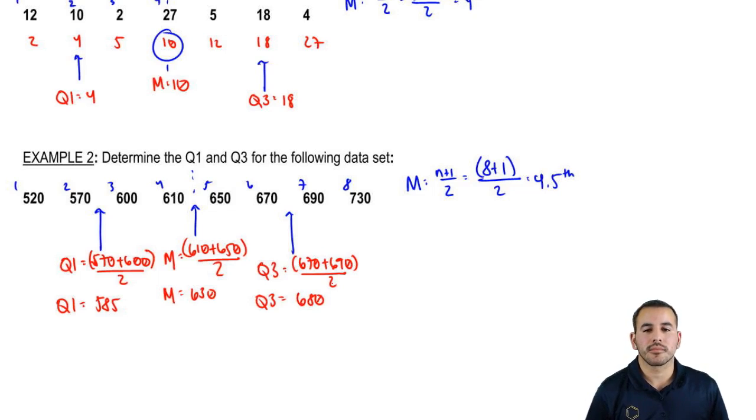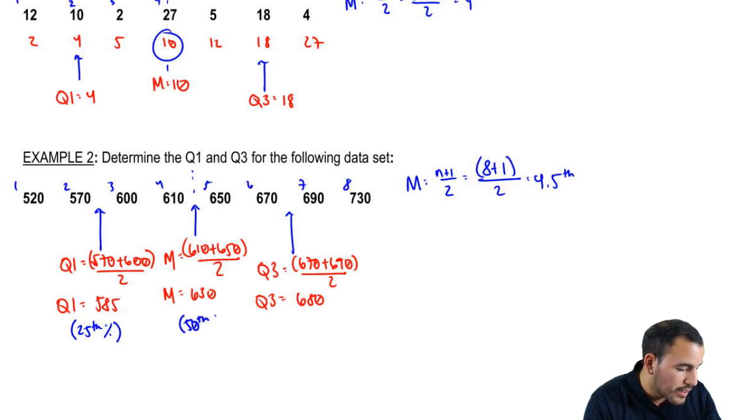That's about it. I want to reinforce that the quartiles break down everything into percentages. So if we were to ever find percentiles, for example, the 75th percentile would be which one? It's just the third quarter. So to recap: the 25th percentile is 585, the 50th percentile is 630, and the 75th is 680.